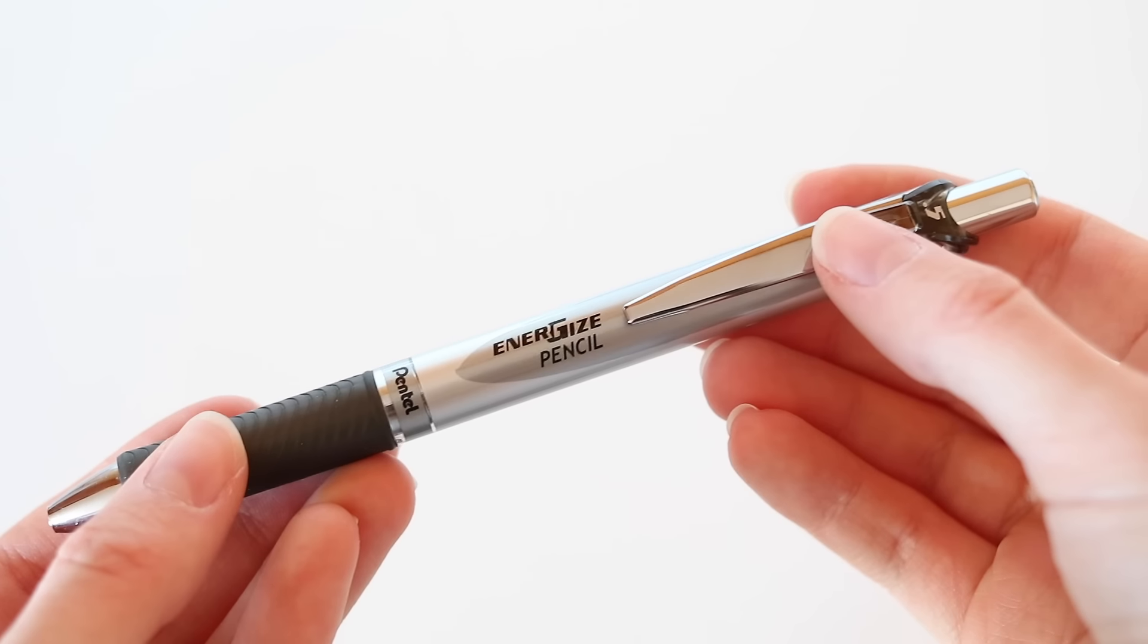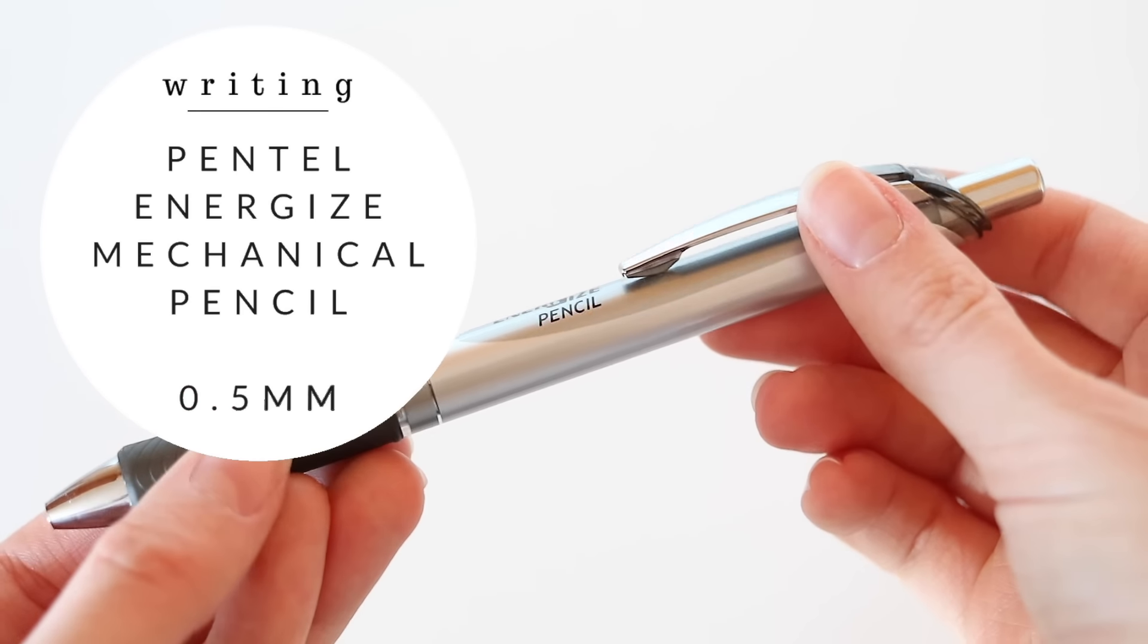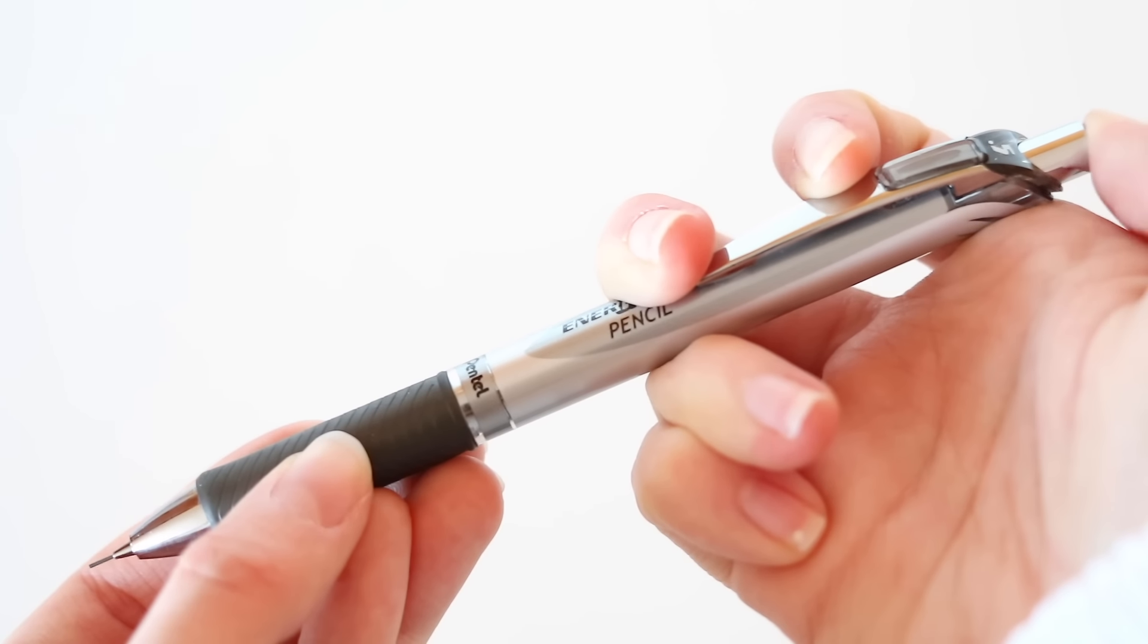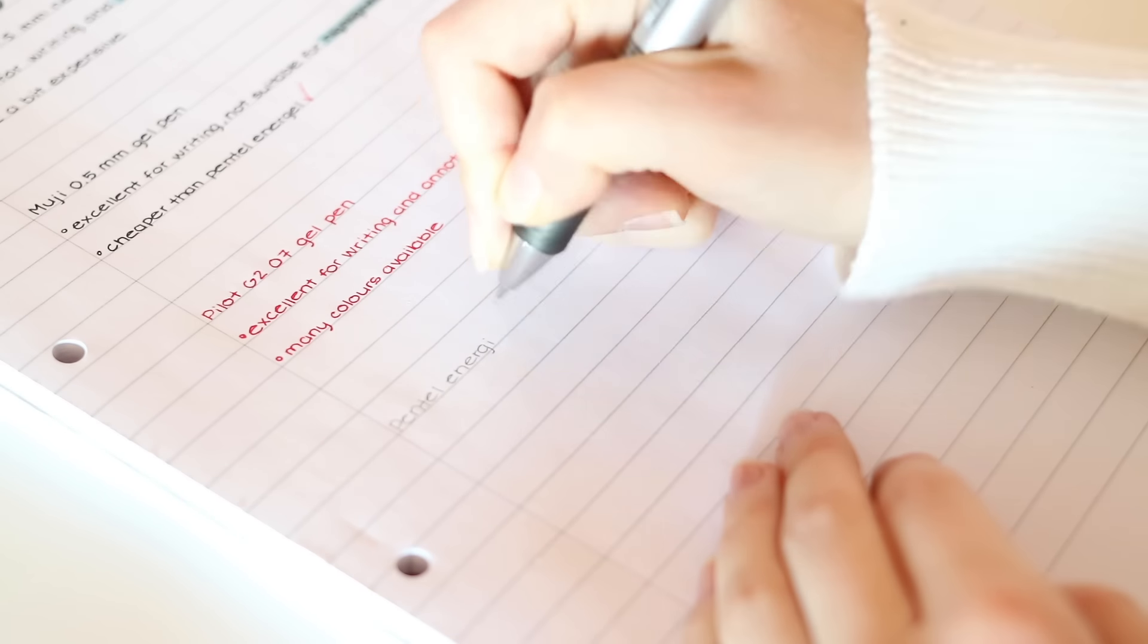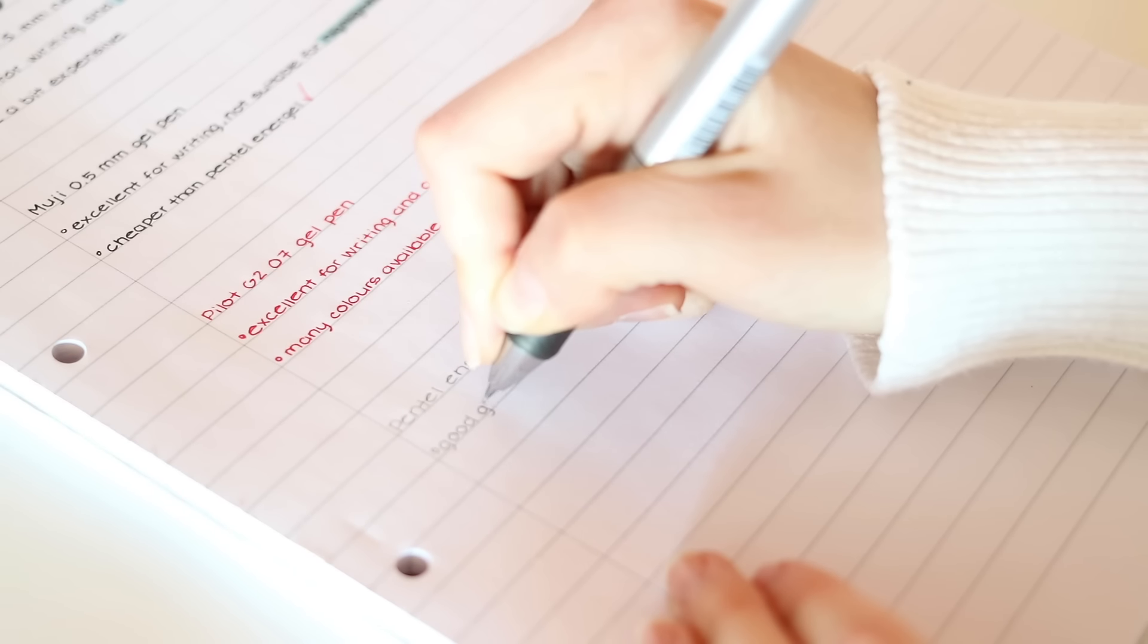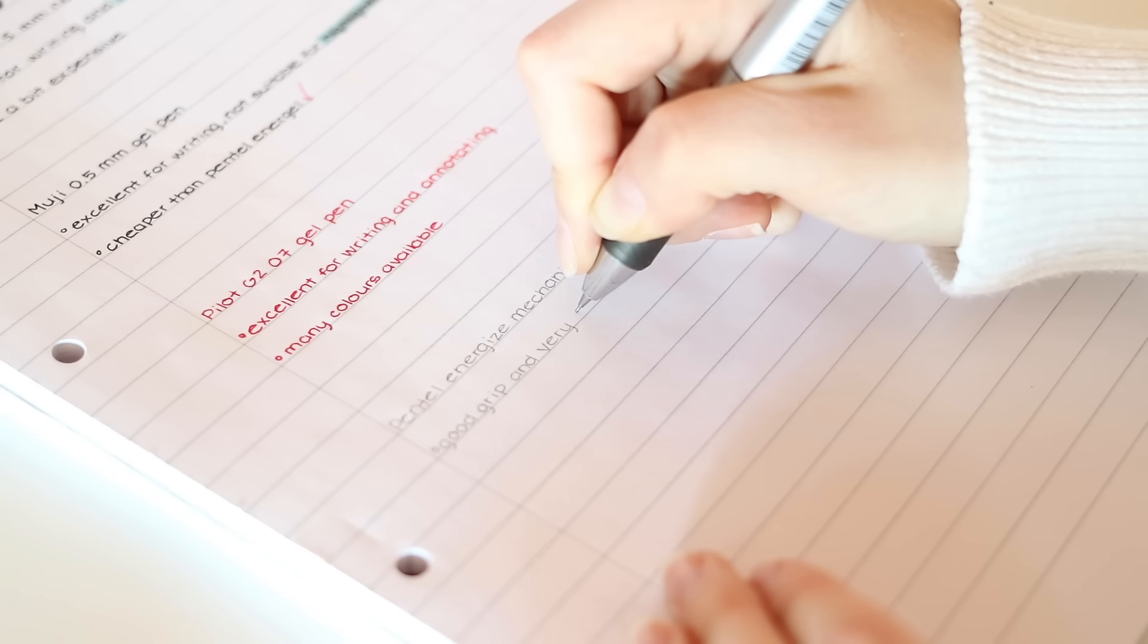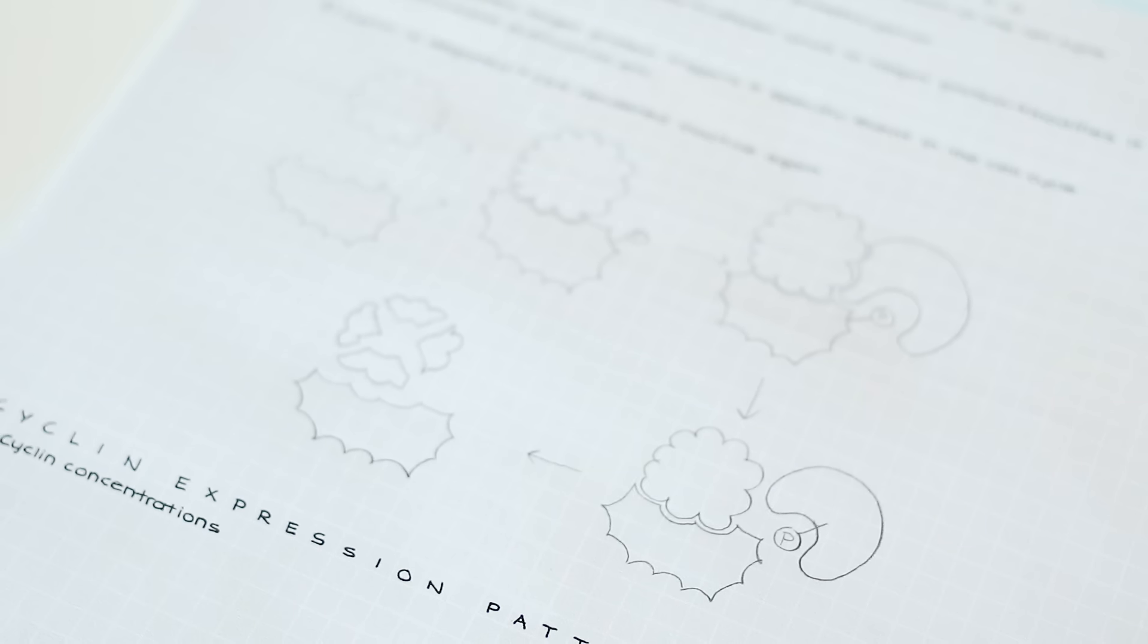The last essential for writing is of course a good pencil. I use this mechanical pencil and it is the Pentel Energize in the size 0.5 millimeters. It is by far my favorite mechanical pencil. The soft grip is very low so it's perfect if you hold the pencil close to the tip like I do so you have very good control of your writing.